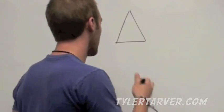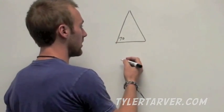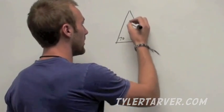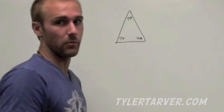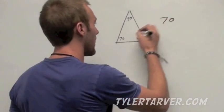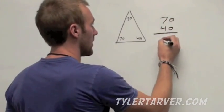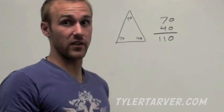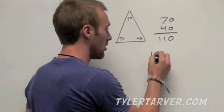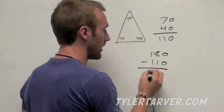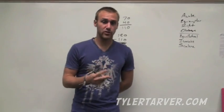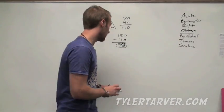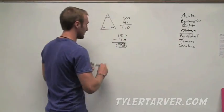There can't be any angles 90 degrees or more. So let's say this one would be 70 and this one would be 40. That means this one has to be 70 as well, because in every triangle ever made, all the angles inside add up to 180 degrees. So if that was 70 and that was 40, that would be 110. To find the other angle, you would subtract 110 from 180, which equals 70. If you have two of the angle measures, you can always find the last one. That is acute.